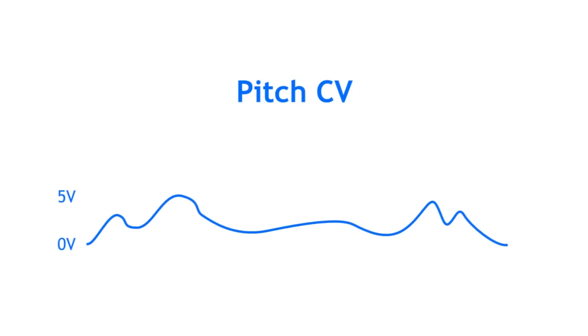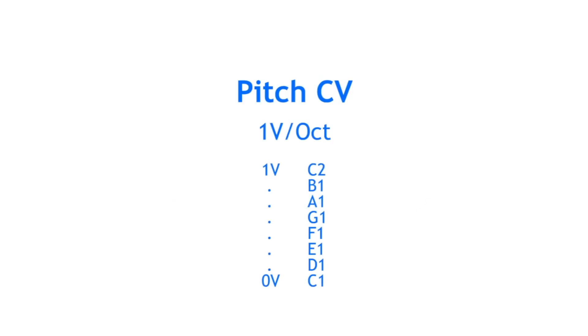Another CV signal is pitch CV, which is used to change an oscillator's frequency in order to play melodies. Pitch CV signals usually range from 0 to 5 volts, with oscillators tracking pitch at 1 volt per octave. This means that one octave on a keyboard is spread over a range of 1 volt. Most modular synth oscillators stay in tune over 5 octaves, some more, some less. Oscillator modules can take CV above 5 volts as well, but their output might not be musical anymore in the classical sense.